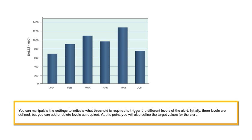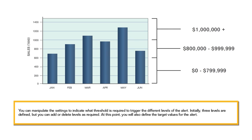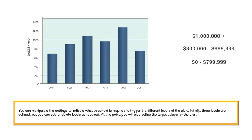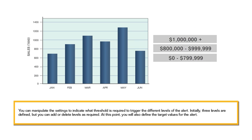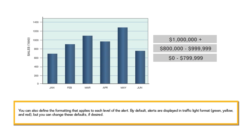You can manipulate the settings to indicate what threshold is required to trigger the different levels of the alert. Initially, three levels are defined, but you can add or delete levels as required. At this point, you will also define the target values for the alert.